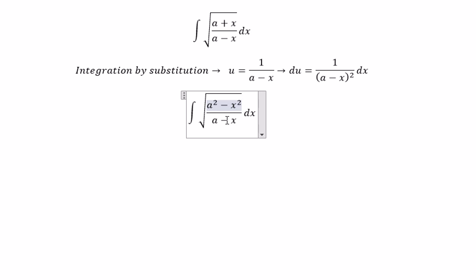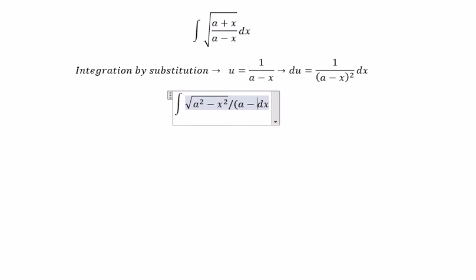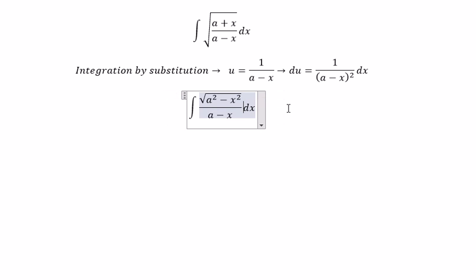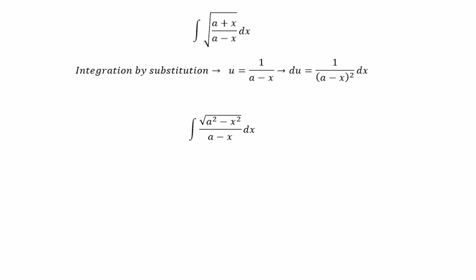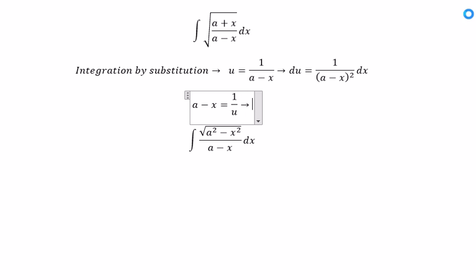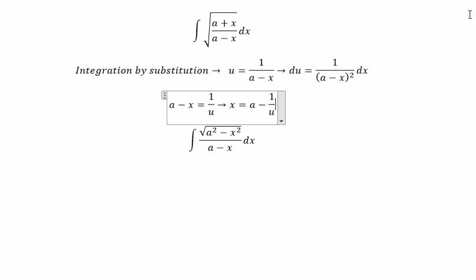This one they will cancel the square root, so you will get about a minus x. Next, we need to find the value of x based on a and u. This one is about a minus x squared. We change for u.